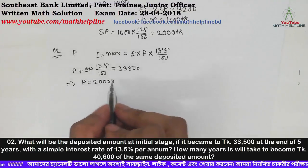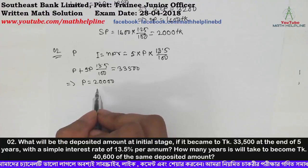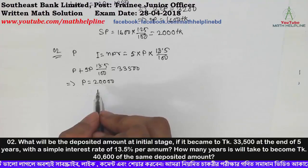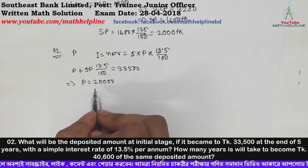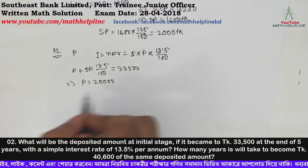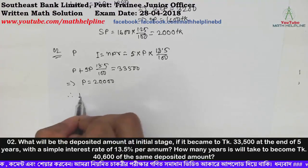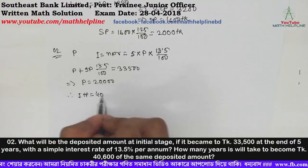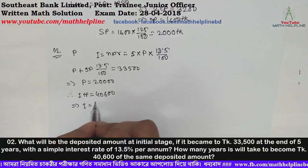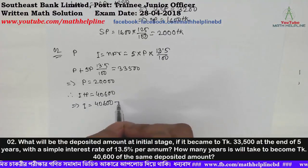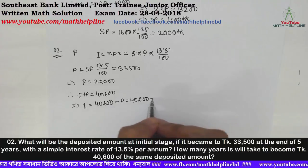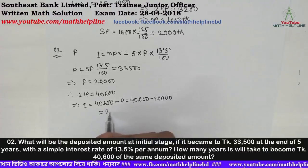So the principal amount comes out to be taka 5,000. The total becomes taka 3,500 times 16.5 by 100. Now we want to find when the amount reaches taka 4,600 from this point. So interest plus principal equals taka 4,600. Therefore the interest here is taka 4,600.